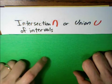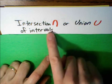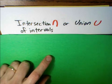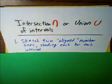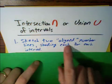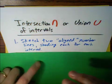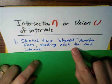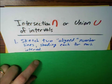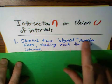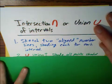In this video, we're going to talk about the intersection and union of intervals. It's assumed that you know about interval notation. What we're going to do first is sketch two aligned number lines — two number lines, one right above the other, lined up as far as the numbers. Then we shade each number line for each interval. This is kind of the notes or scratch paper for the problem.